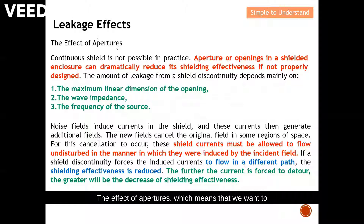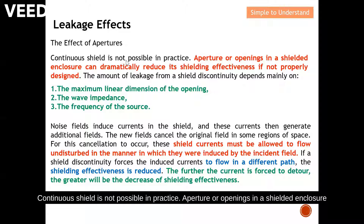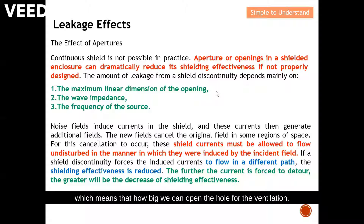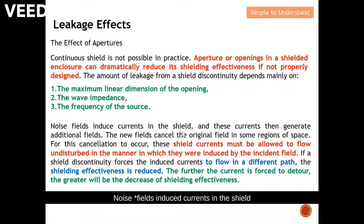The effect of apertures: any opening for purposes like ventilation means a continuous shield is not possible in practice. Apertures or openings in a shielded enclosure can reduce its shielding effectiveness if not properly designed. The amount of leakage from a shield discontinuity depends mainly on three factors: number one, the maximum linear dimension of the opening — that is, how large the hole can be for ventilation; next, the wave impedance; and the frequency of the source.